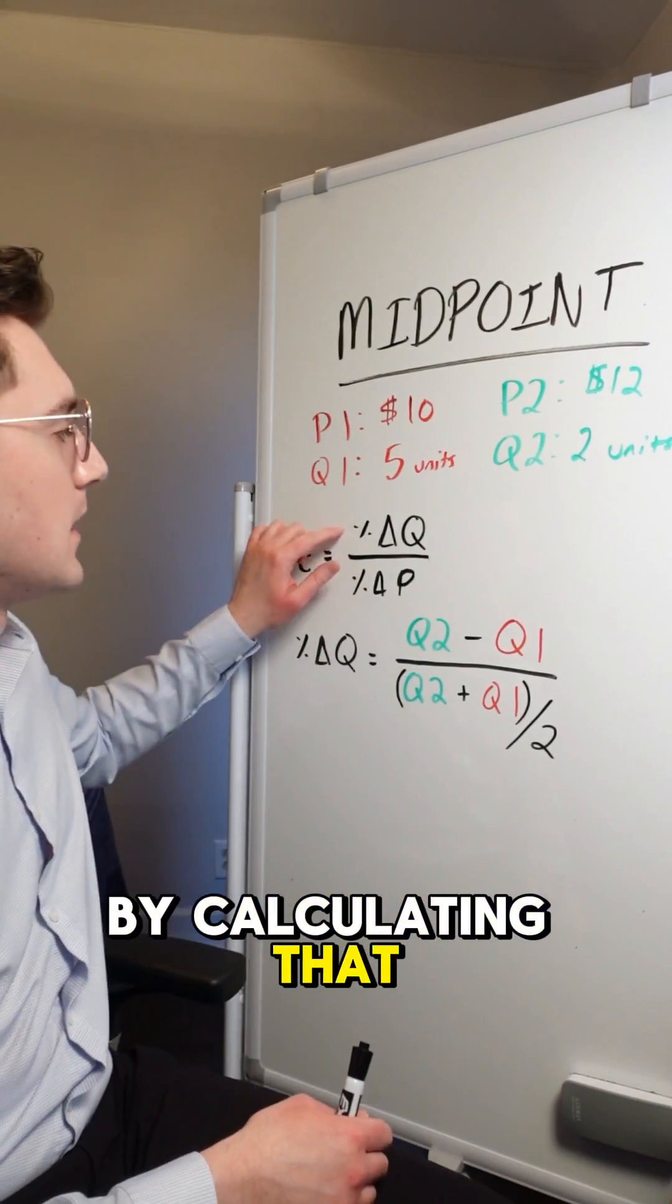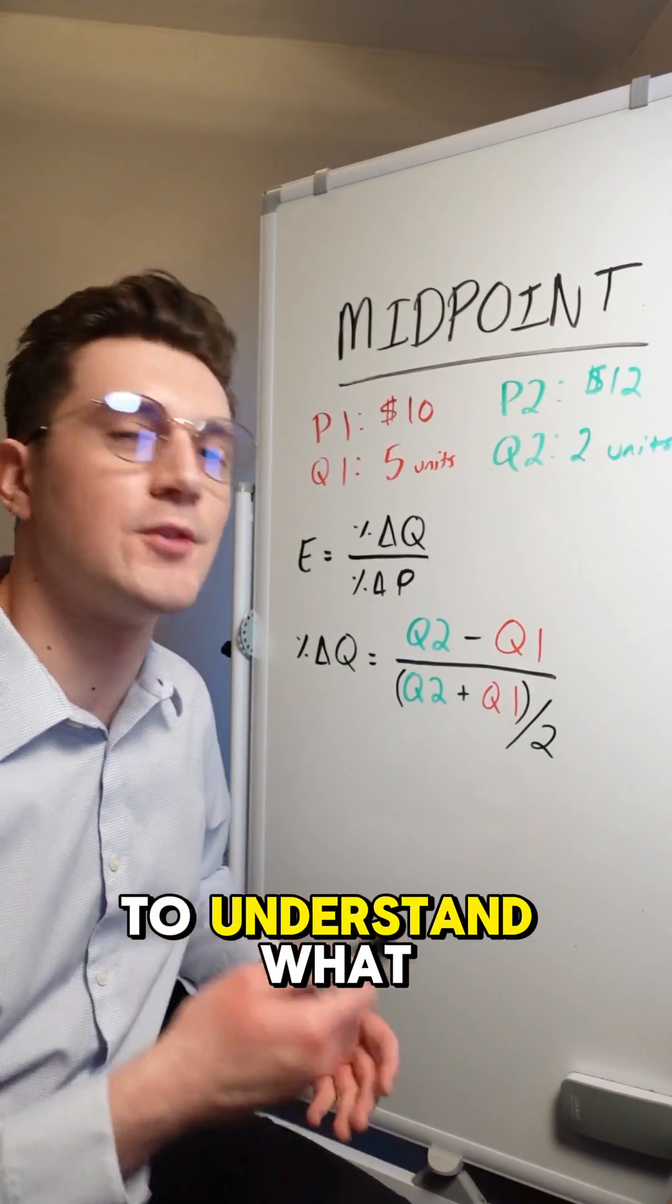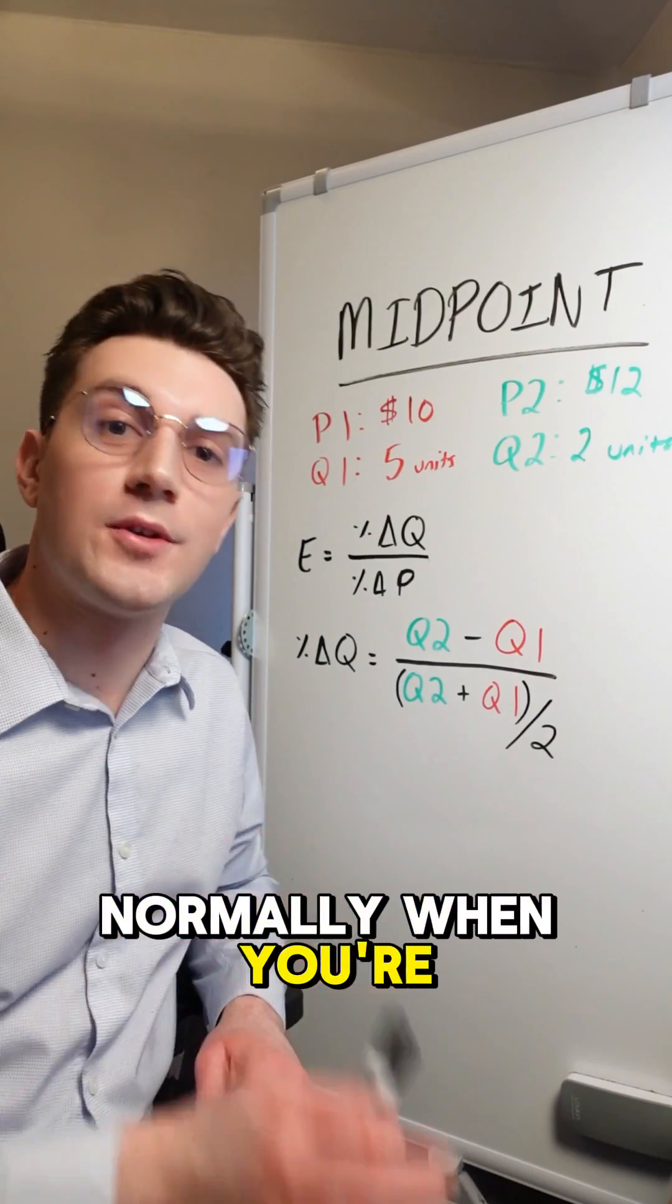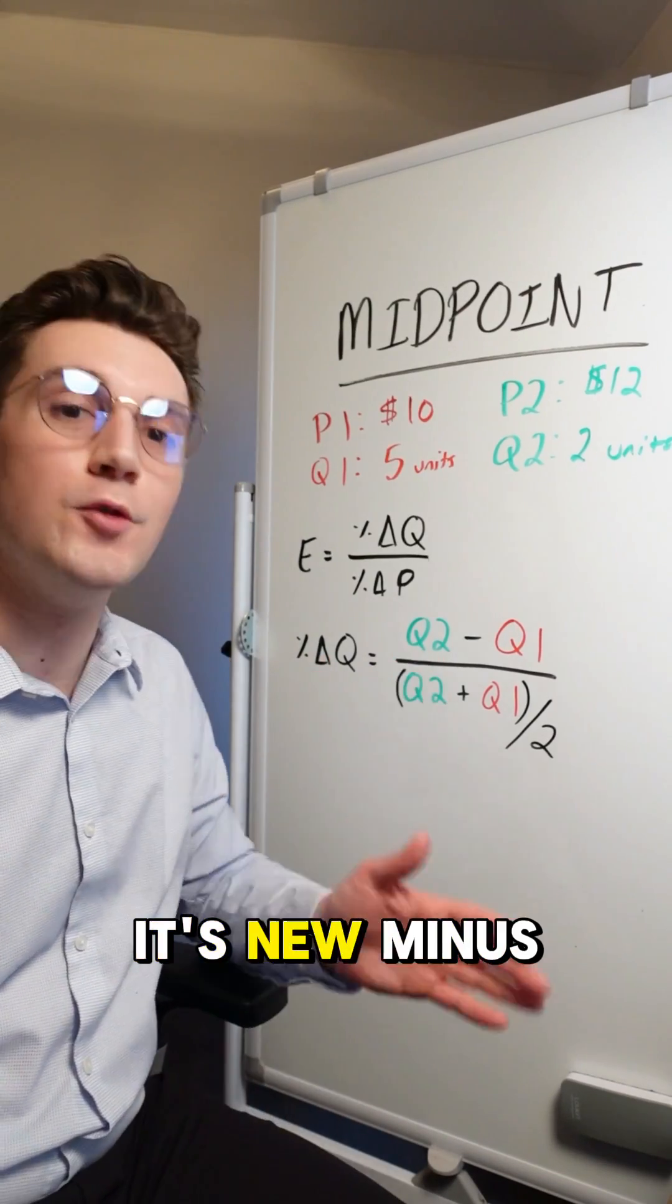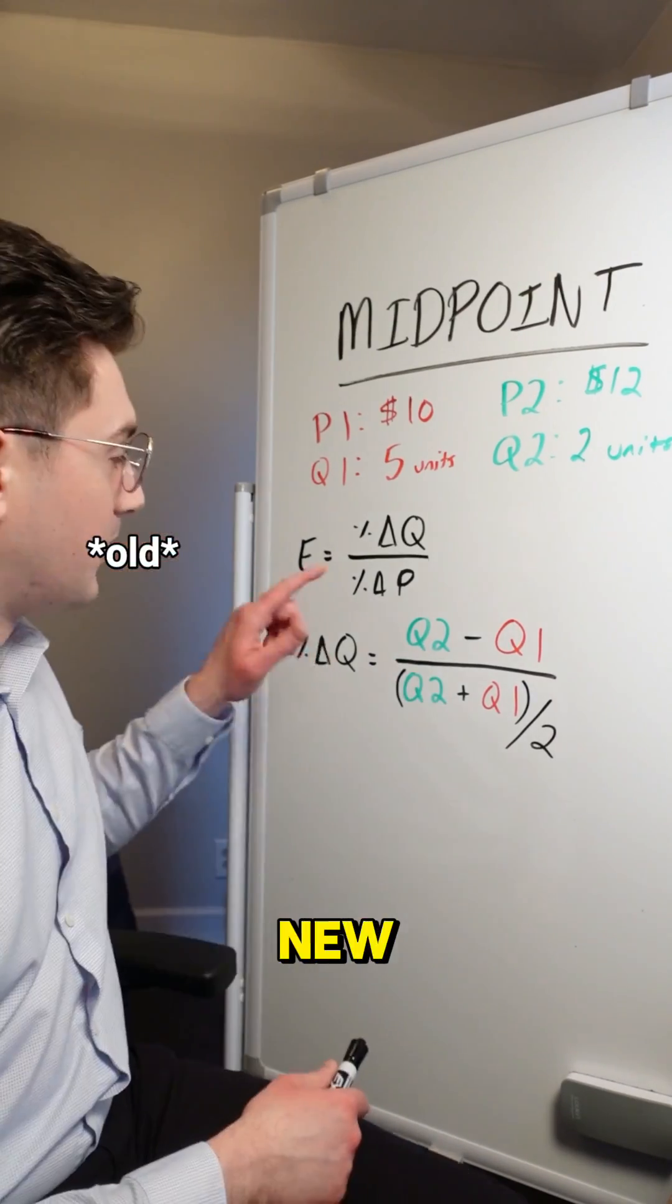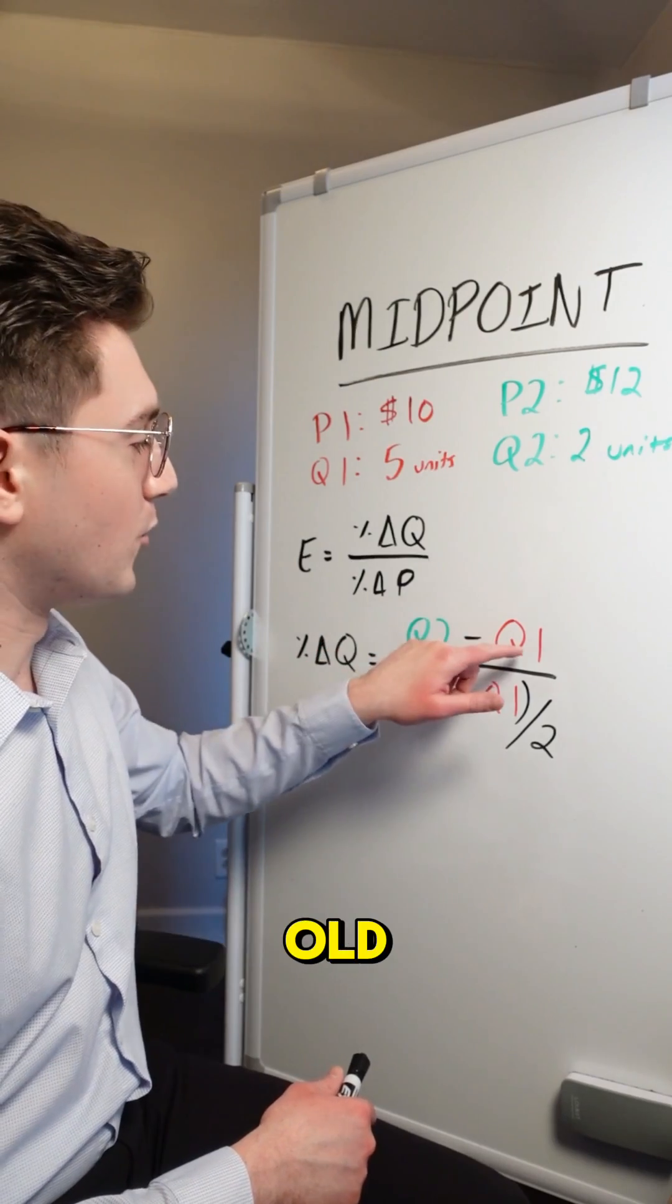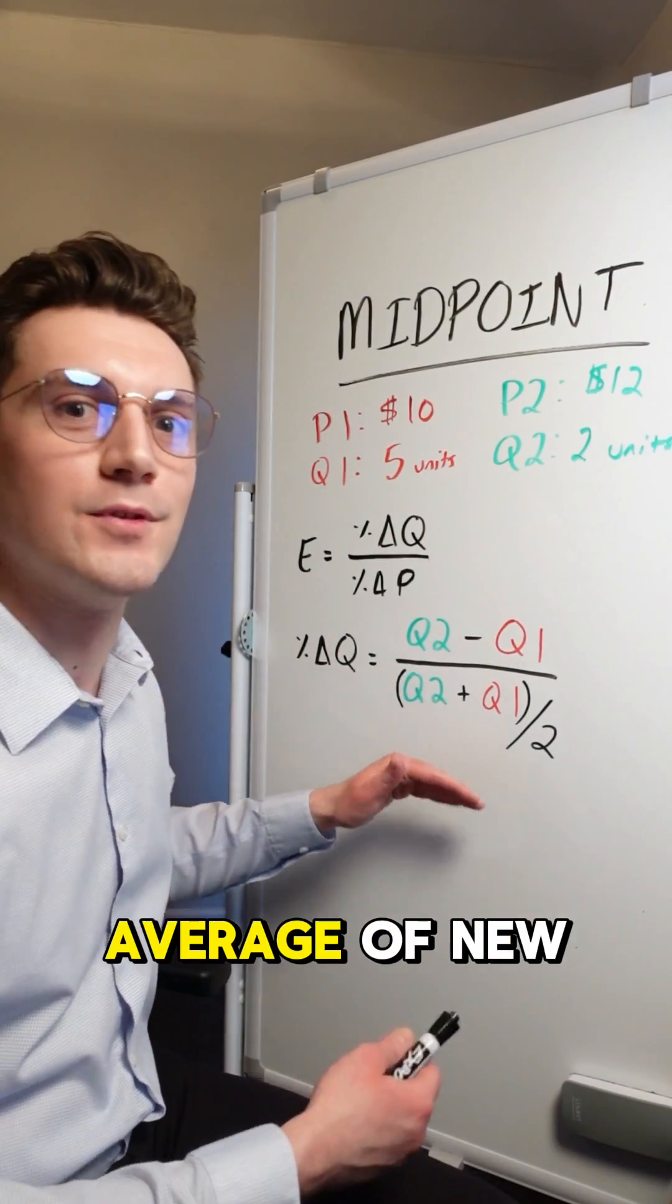Let's start here by calculating that percent change in quantity to understand what this actually means. Normally when you're calculating percent change, it's new minus old divided by new. But here we're doing new minus old divided by the average of new and old.